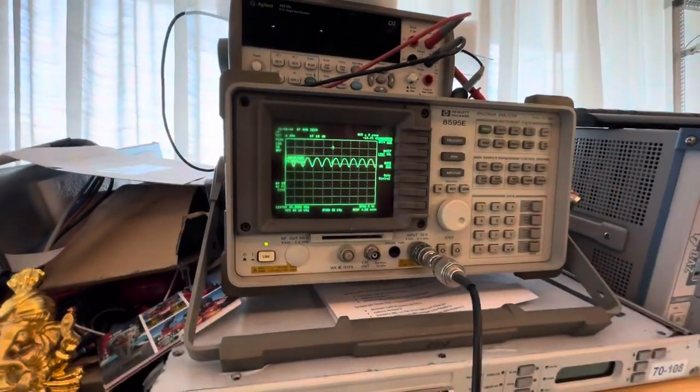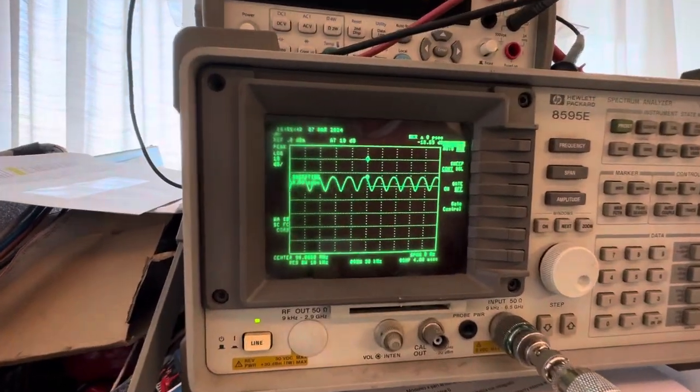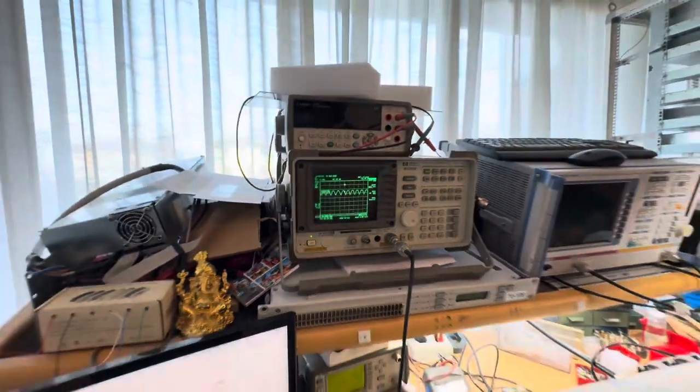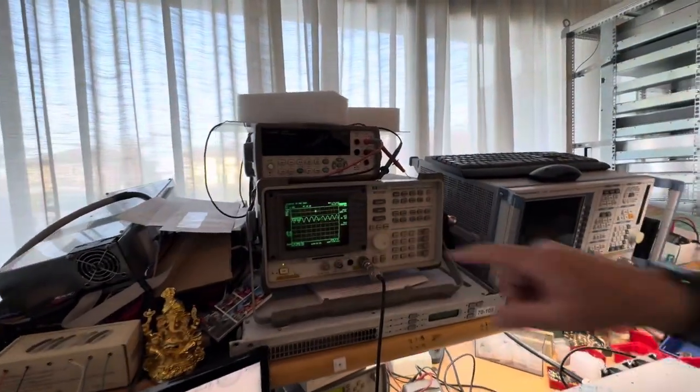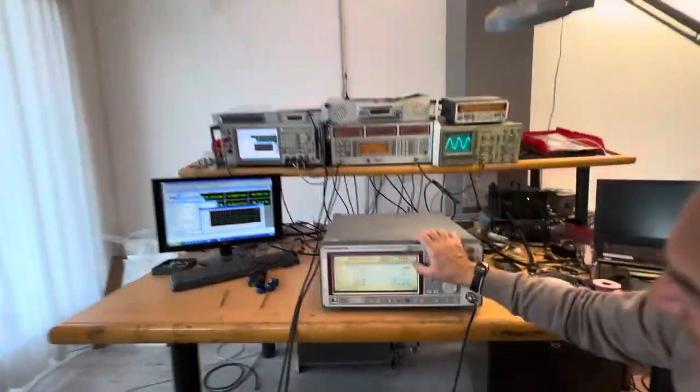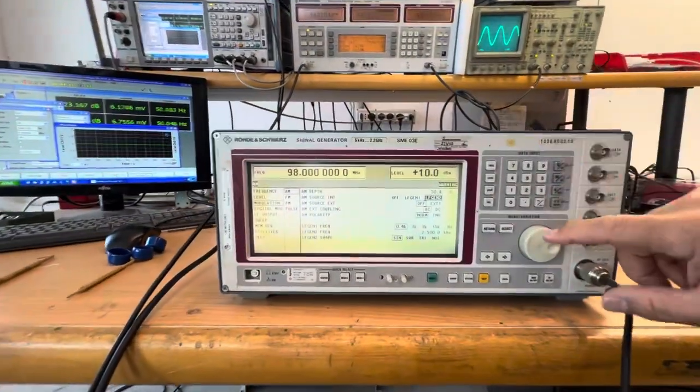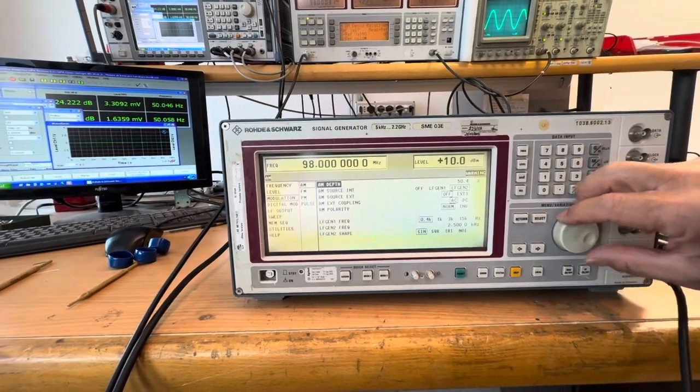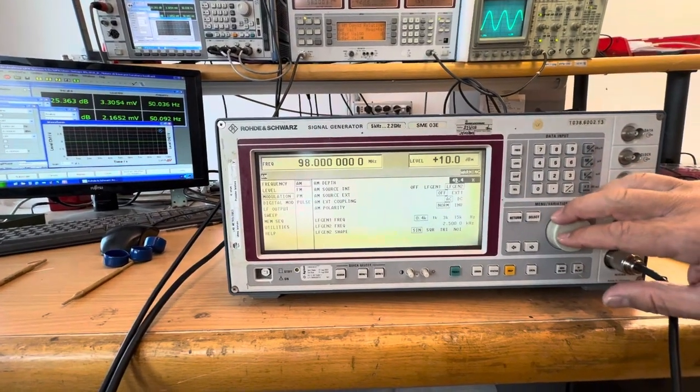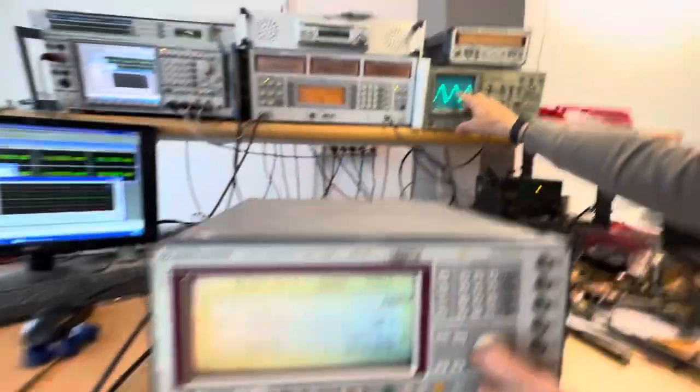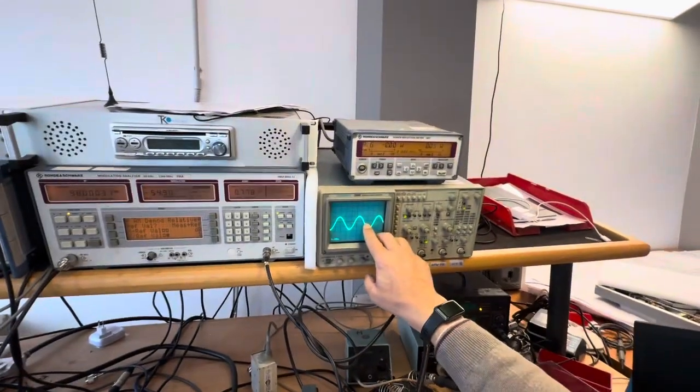You can see the frequency we are now modulating in AM. We can see how we are getting the amplitude modulation. Of course the depth depends on the amplitude I am getting here. If I decrease it, for example, you see how the amplitude and the sinus here decrease.